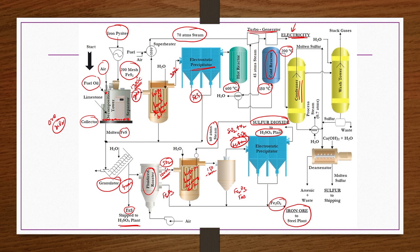Sulphur vapour at 200°C is taken to a condenser where molten sulphur drops are sprayed from the top to condense the sulphur vapour. Any uncondensed sulphur vapours, unreacted SO2, or other gases are taken to a wash tower where water is sprayed from the top to collect remaining sulphur from the bottom. Waste gases with permissible limits of SO2 are then sent to the atmosphere.